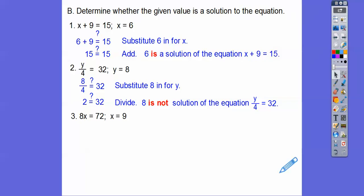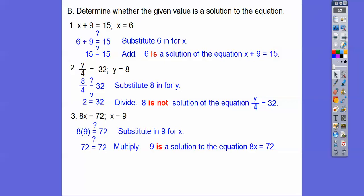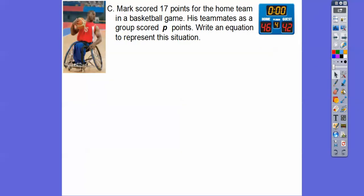So now we're going to plug in x equals 9 right here. So 8x is the same as 8 times x. So is 8 times 9 equal to 72? And yeah, 8 times 9 does equal to 72. So that tells us that 9 is the solution to the equation 8x equals 72.